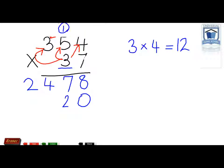3 times 5 equals 15 plus the 1 we carried over would equal 16. So we put down the 6 and we carry the 1.